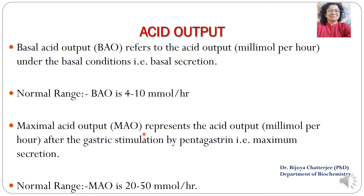The basal acid output, abbreviated as BAO, refers to the acid output in millimoles per hour and is done under basal conditions — that is, the secretion of gastric juice with minimal stimulus when the person is at rest, with no anxiety and no stress. The normal reference range of BAO is 4 to 10 millimoles per hour.